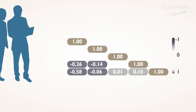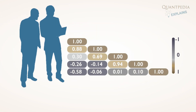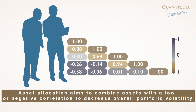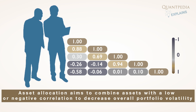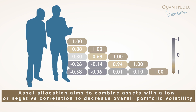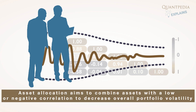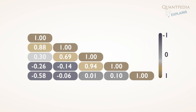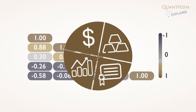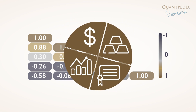Investment managers often monitor asset correlation closely since asset allocation aims to combine assets with a low or negative correlation to decrease overall portfolio volatility. Therefore, the correlation of the model portfolio to the major segments is essential information for asset allocation decisions.